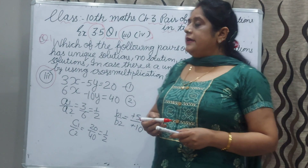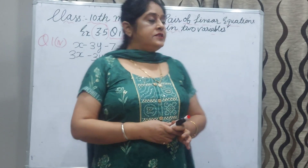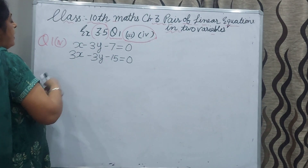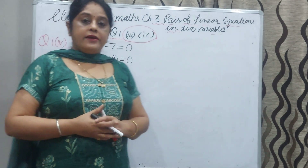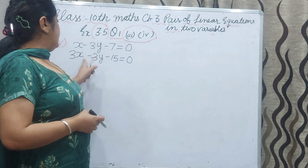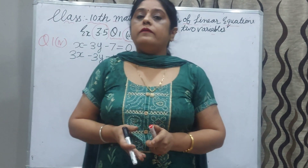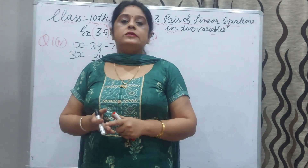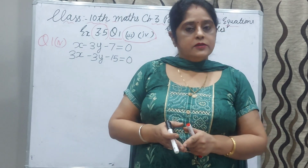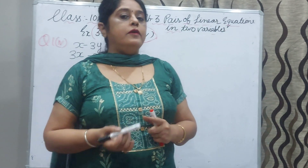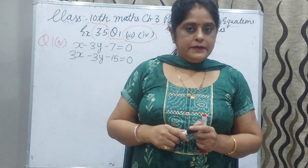Now I will explain part 4. The part 4 statement is: x minus 3y minus 7 equal to 0, and 3x minus 3y minus 15 equal to 0. You have to check whether they have a unique solution, no solution, or infinitely many solutions. If they have a unique solution, then you solve by the cross multiplication method.